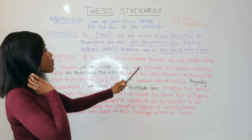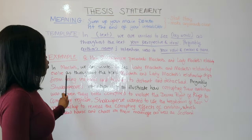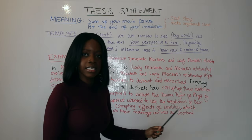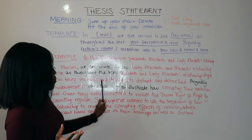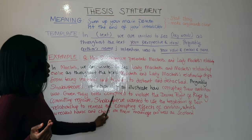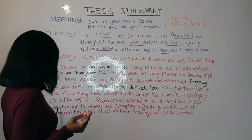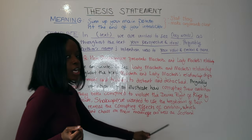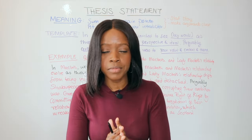In Macbeth, we are invited to see Lady Macbeth and Macbeth's relationship evolve, as throughout the text Macbeth and Lady Macbeth's relationship shifts from being intimate and trusting to distant and detached. Arguably, Shakespeare's intention was to illustrate how corrupting their ambition was, given they both conspired to violate the divine right of kings by committing regicide. Shakespeare wanted to use the breakdown of their relationship to reveal the corrupting effects of ambition, which wreaked havoc and chaos in their marriage as well as Scotland.